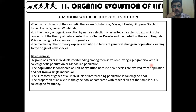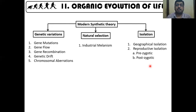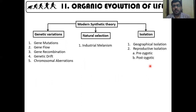Modern Synthetic Theory has three parts: genetic variations, natural selection, and isolation. These are the three points we're going to cover. How do variations occur in a population? Everything is now being explained in the light of genetics.